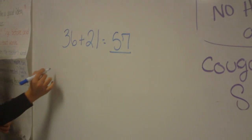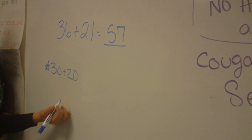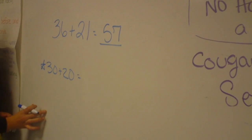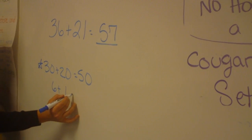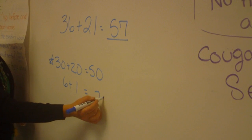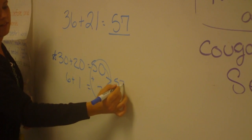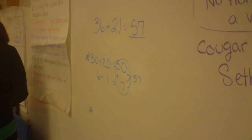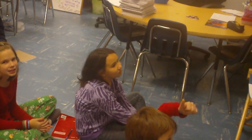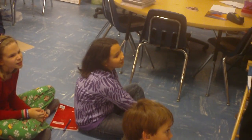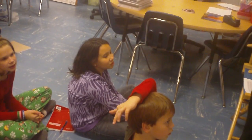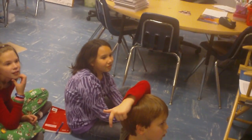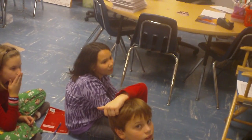How did you get it? I did 30 plus 20, and then 6 plus 1. That's 50. And I did 6 plus 1, which equals 7. And then 57. I did 36 plus 10, and that was 46. 46 plus 10 — 56. Plus the 1, which is 57.